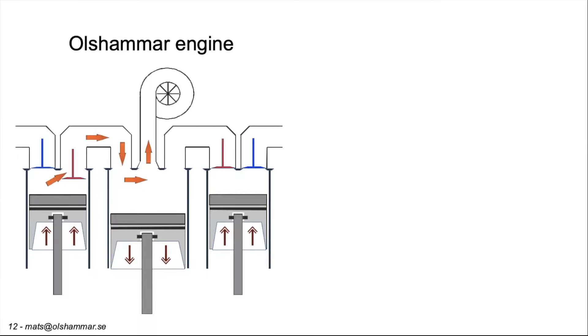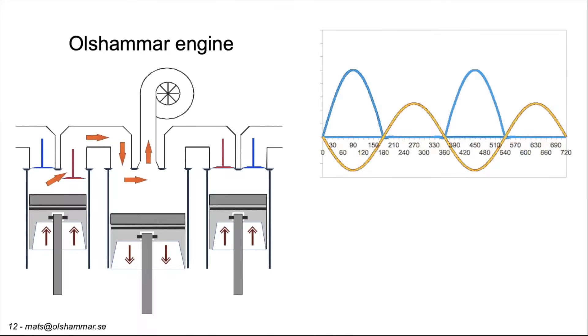The idea with the Olsammar engine is that half of the exhaust shall flow directly to the turbo while the other half is pushing down the exhaust piston. This way we can divide the two exhaust peaks from the combustion cylinder into four smaller exhaust peaks that will be driving the turbo.